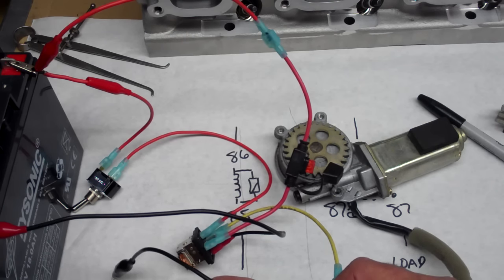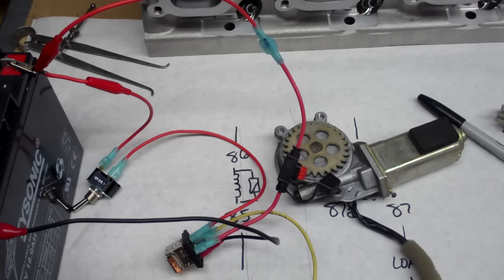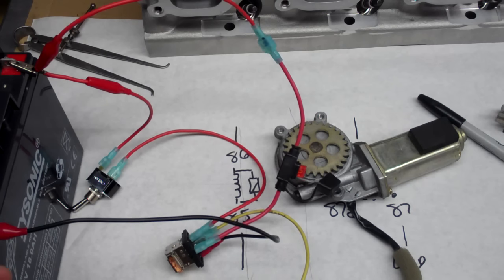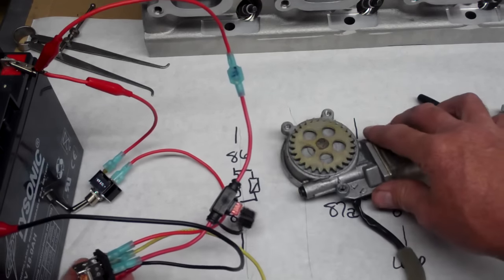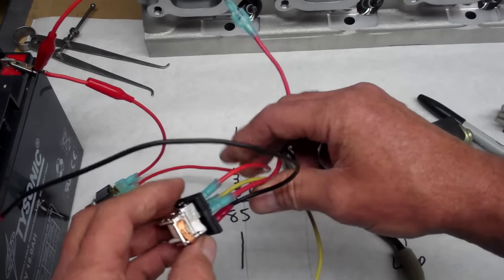And then I'm going to take another jumper wire and put the motor back to ground. Jumper wire there and connect it to the battery. So now there's my circuit. And it's kind of ugly, but it'll work.